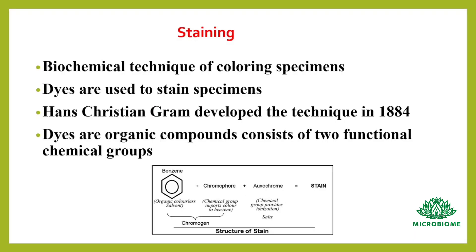First about staining: this is the biochemical technique of coloring the specimens. Dyes are used to stain the specimens. Hans Christian Gram developed this technique in 1884. These dyes are organic compounds. They consist of two functional chemical groups, i.e., chromophore and oxochrome, which gives the stain.